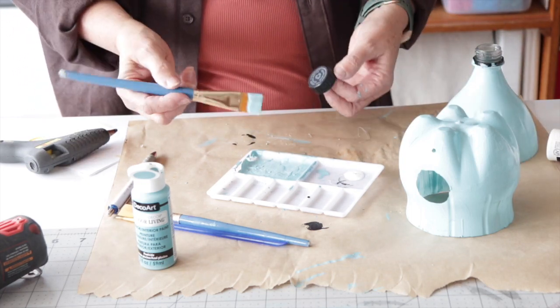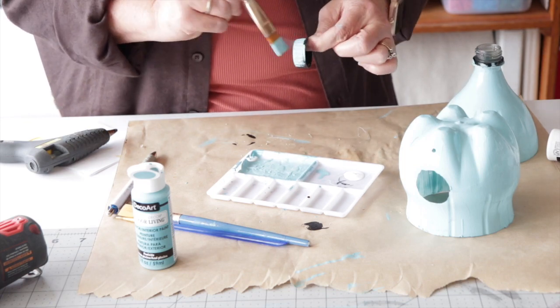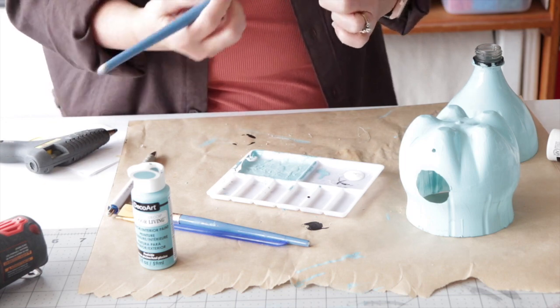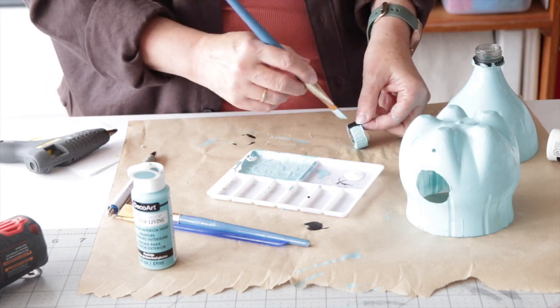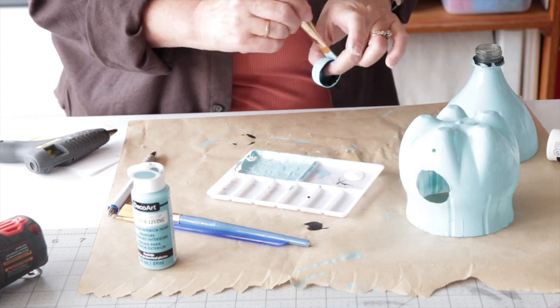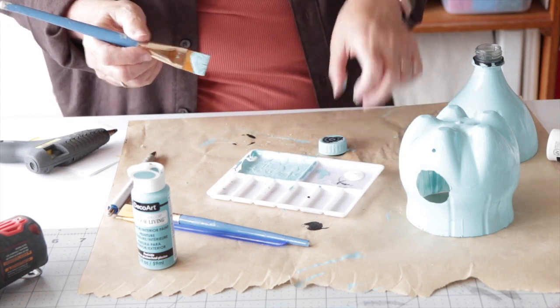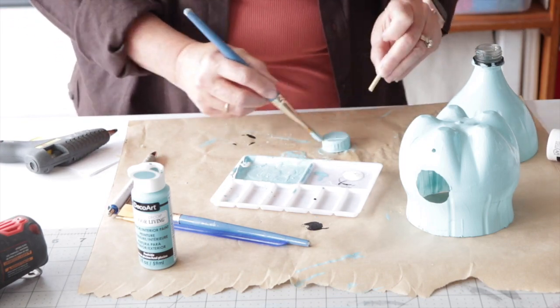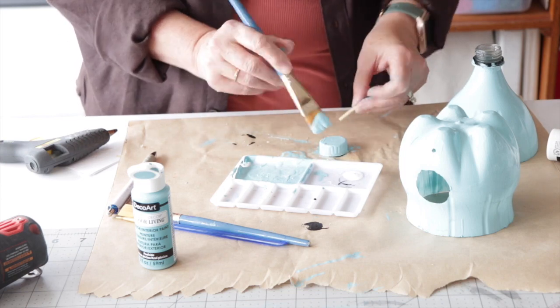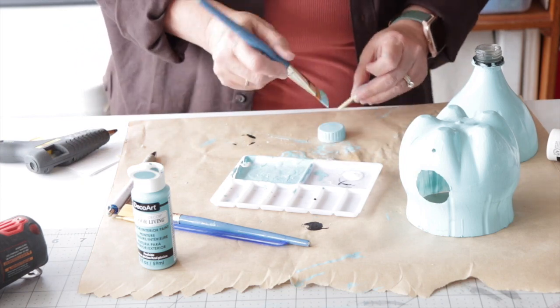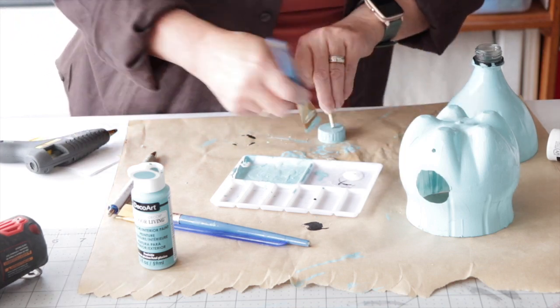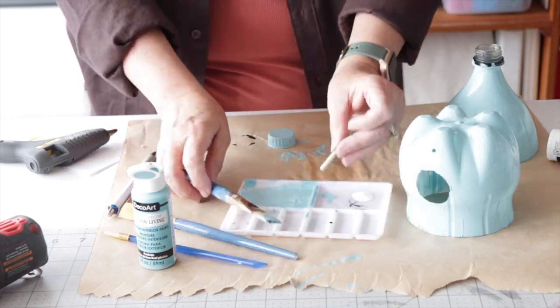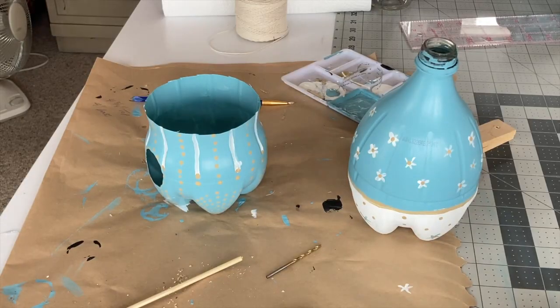And then you just let those dry. When you have the layers on that you want, you are ready to decorate the pots even more. You can draw flowers, polka dots, stripes, whatever your imagination and creativity will allow. And here I'm just painting the cap, which can be a little tricky. I use a little toothpick to kind of help me hold it down while I paint it.